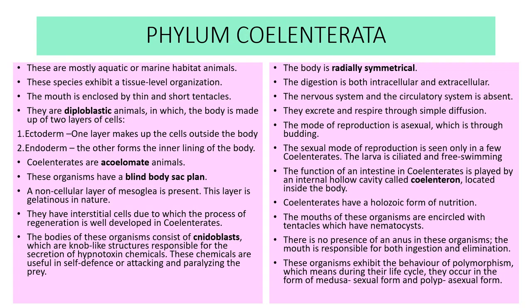The mouth is enclosed by thin and short tentacles. Cnidarians are acoelomate animals and show a blind body sac plan. A non-cellular layer of mesoglia, gelatinous in nature, is present between the ectoderm and endoderm. They have interstitial cells due to which the process of regeneration is well developed. The body has cnidoblast, knob-like structures responsible for secretion of hypnotoxin chemicals.